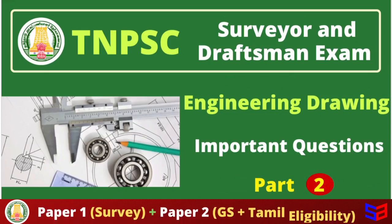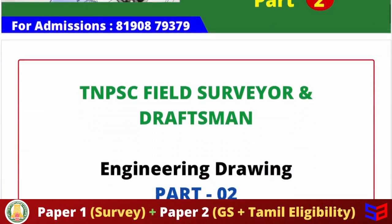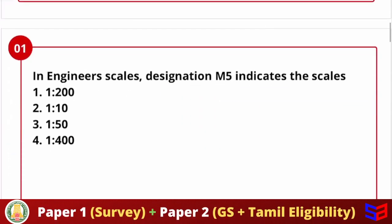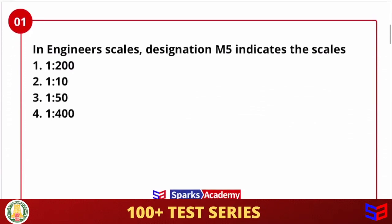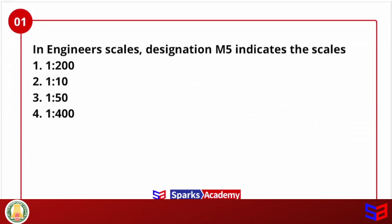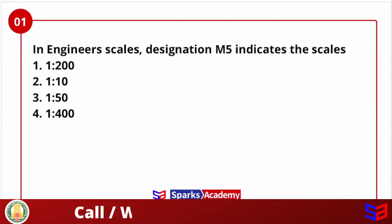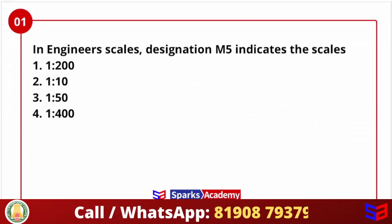Let's move on to the first question. In engineer scale, the designation M5 indicates which scale? The options are: one to two hundred, one to ten, one to fifteen, one to four hundred. In engineer scale, what does the M5 designation represent?